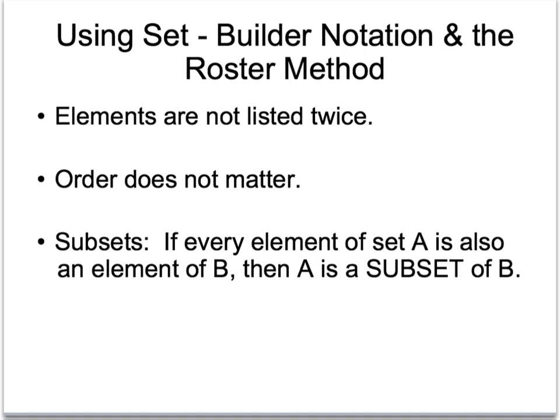When we're using set builder notation and the roster method both, the elements are not listed twice. And order does not matter. So, if I have two 2's in a set, I'm only going to list one 2. And I don't have to go in order numerically. It can be in any order that I want.